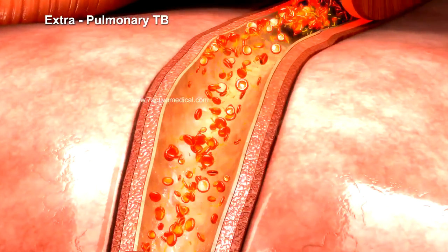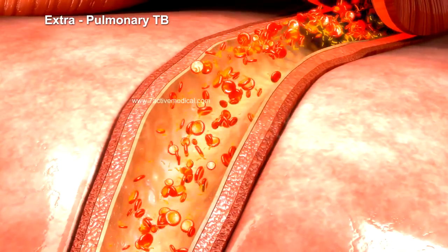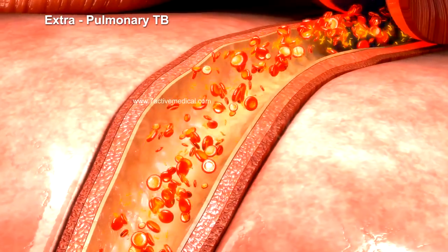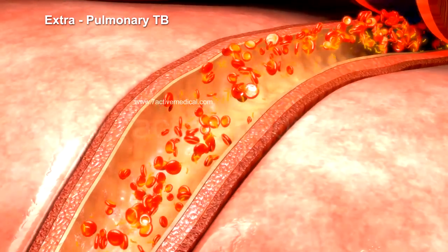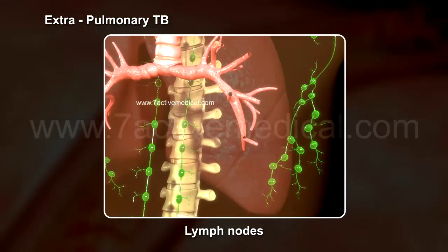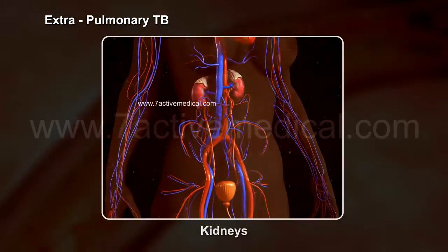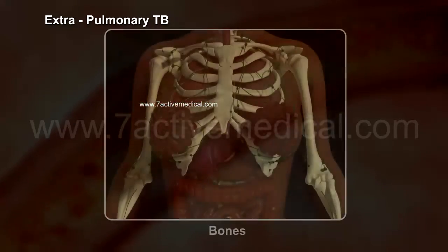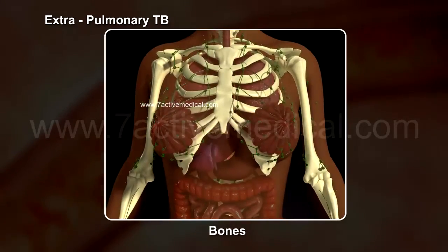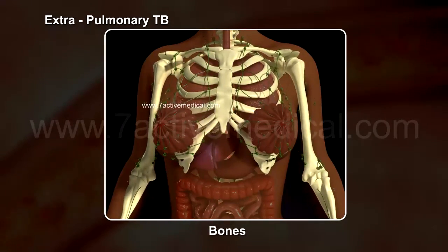When the TB bacteria enter the bloodstream and spread to other parts of the body, especially the lymph nodes, kidneys, brain, or bones, the condition is known as extra-pulmonary TB.